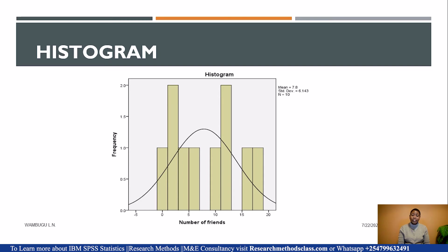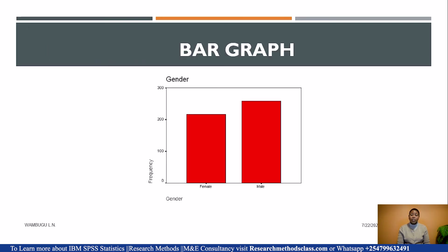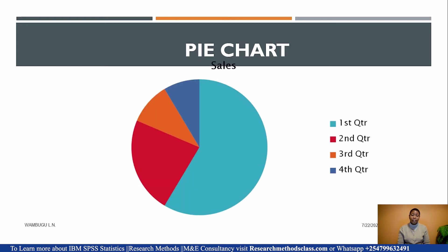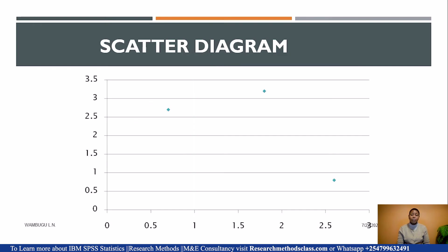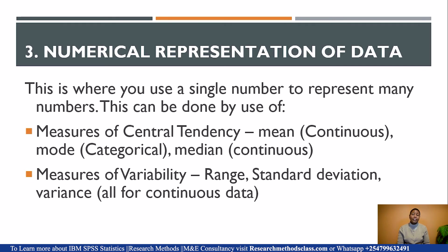We have a histogram which has a frequency polygon. Because a histogram is drawn from continuous data, it also gives us the mean and the standard deviation. Then we have a bar graph — you can see the bars are not joined because you are dealing with categorical variables. Pie charts are also for categorical variables, and scatter diagrams are for continuous data.